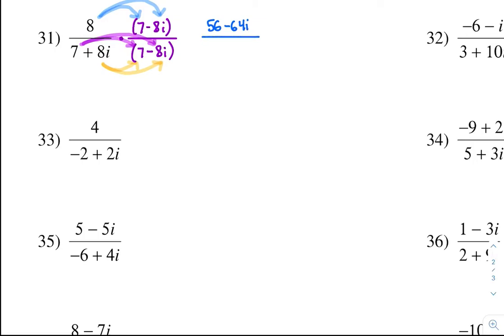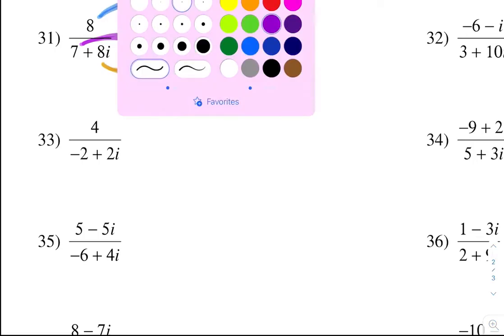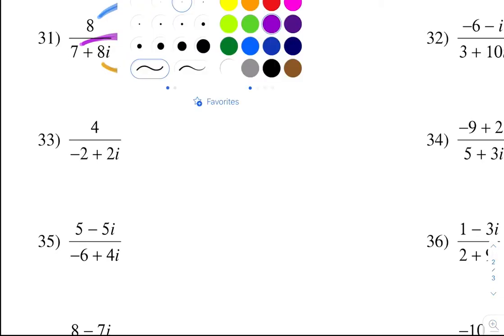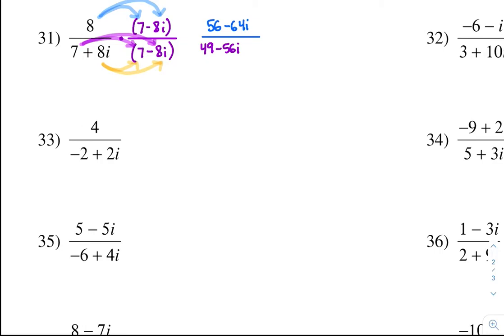All divided by — following the purple pathway — 7 times 7 is 49, and 7 times negative 8i is negative 56i. Now the orange pathway: 8i times 7 is 56i. And lastly, 8i times negative 8i — that is negative 64i squared.